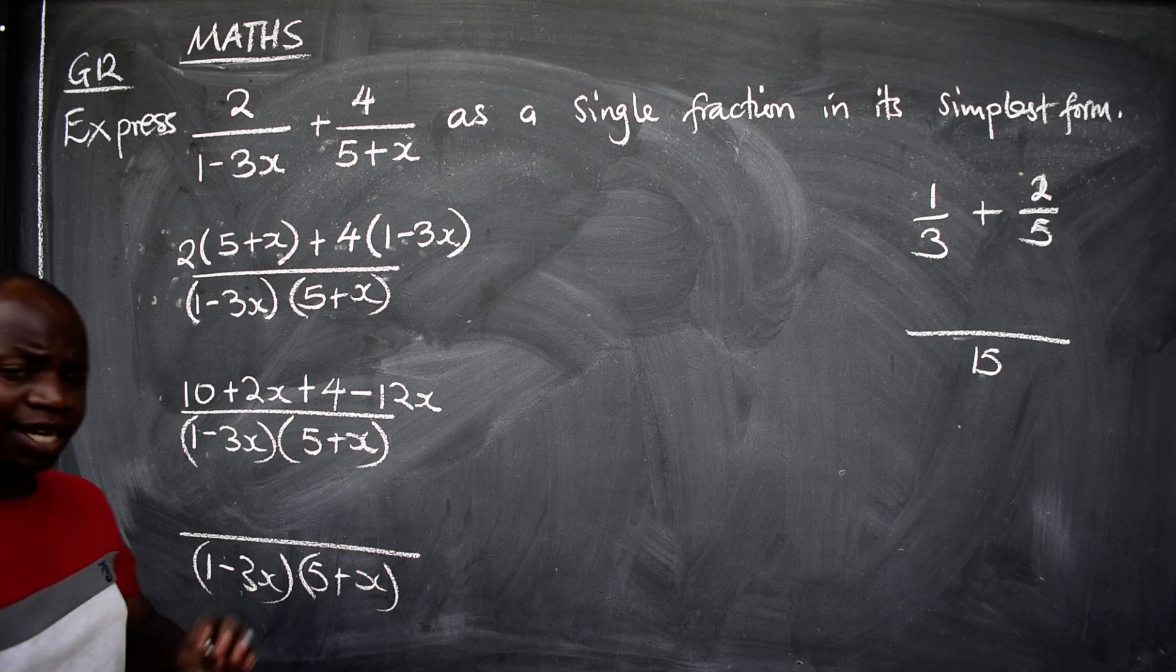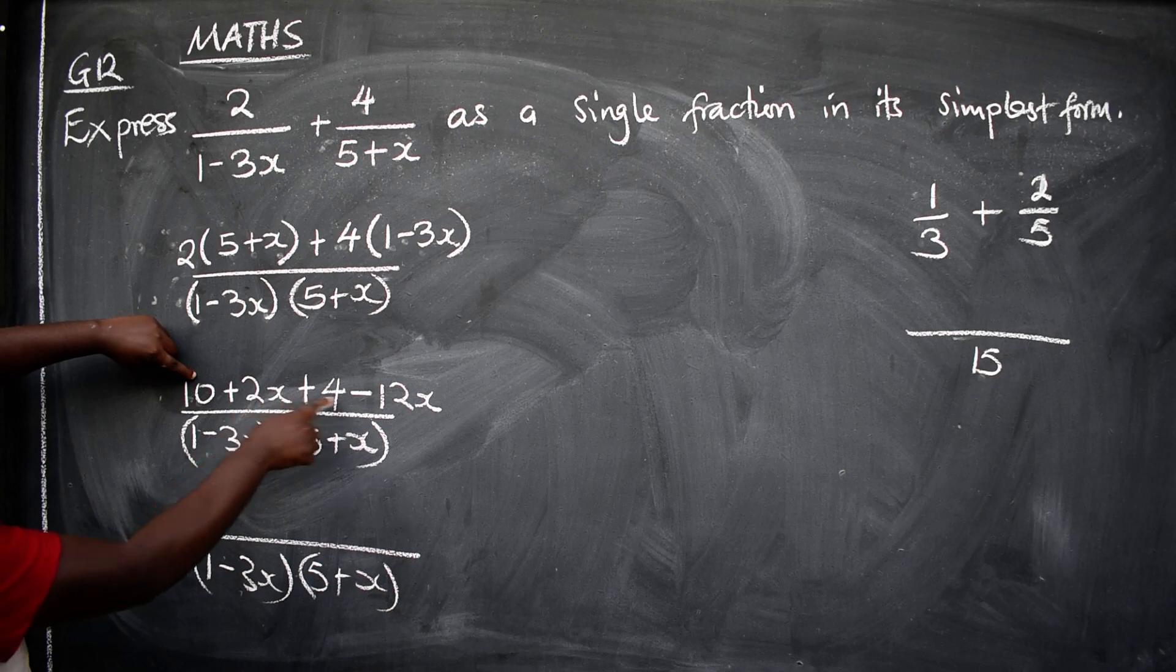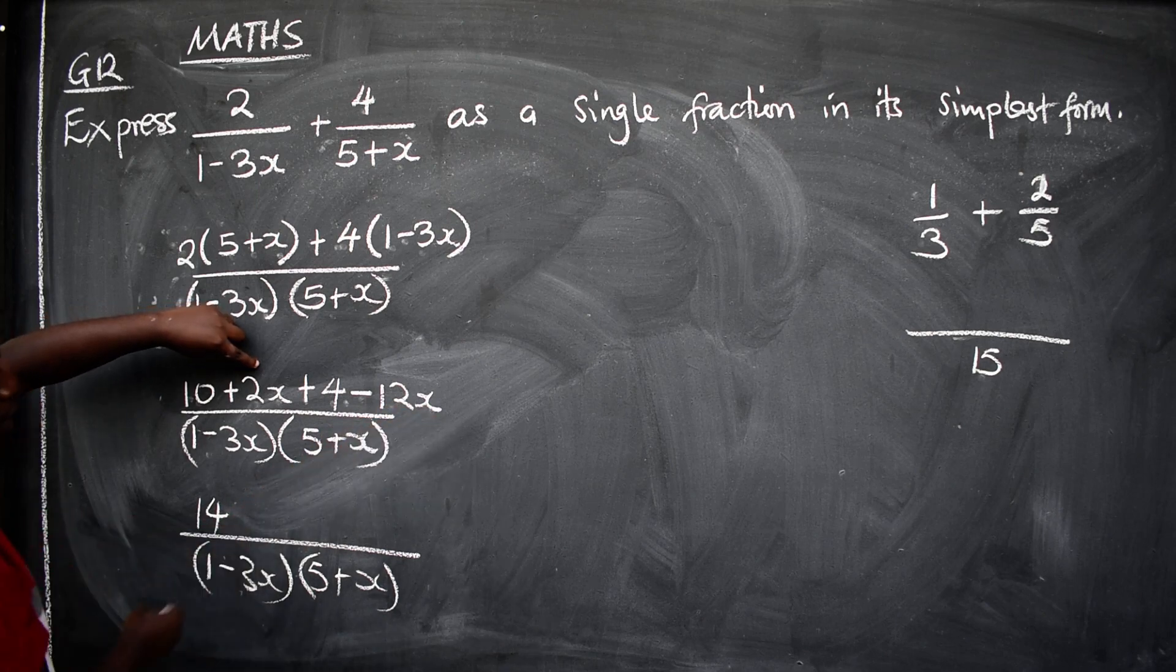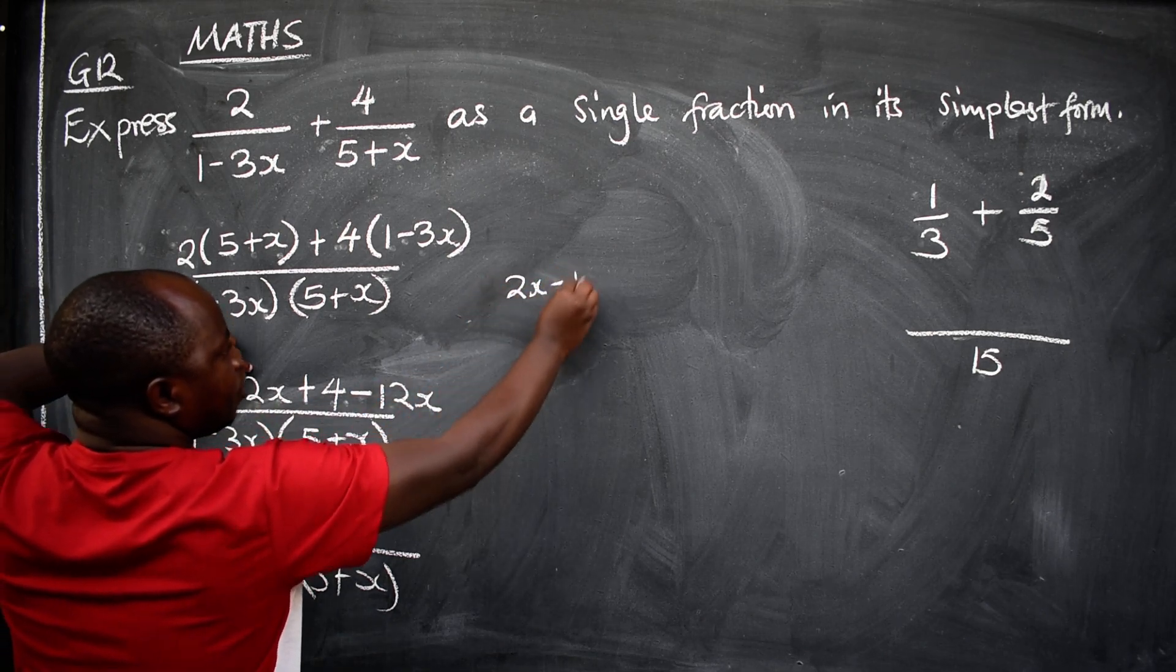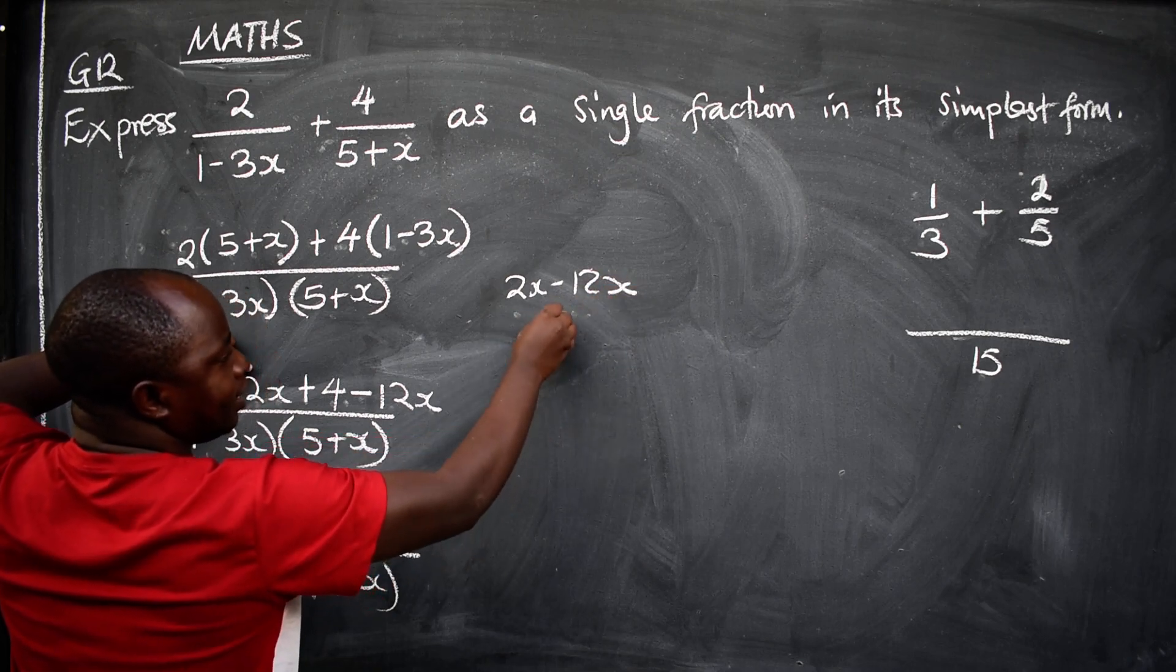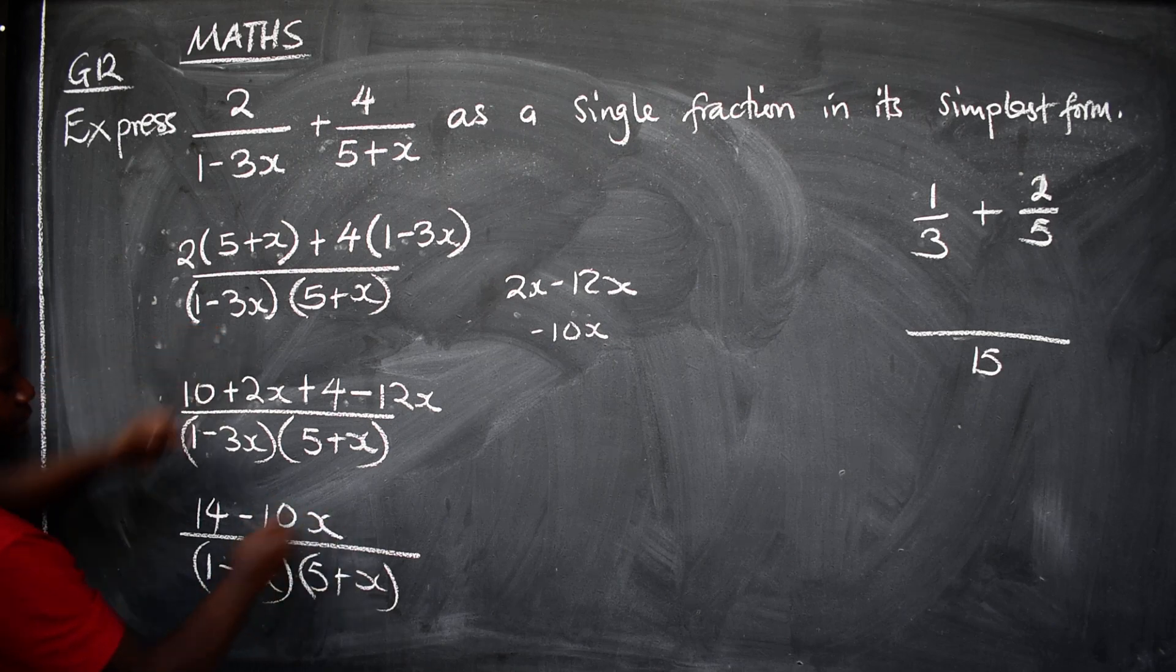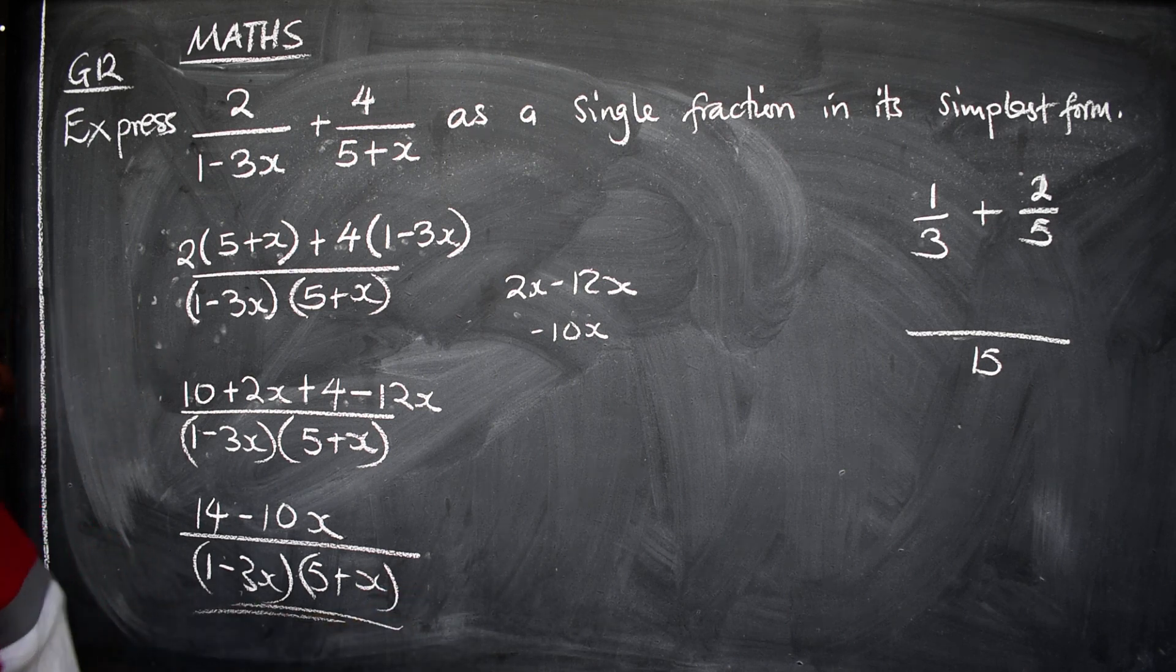The numerator like terms can be added. So we have a 10 and a 4, 10 plus 4, this will give us 14. Then we have 2x minus 12x. So in this case, we have 2x minus 12x, so the answer is negative 10x. So negative 10x. So this is now a single fraction. You leave it here. This is your final answer.